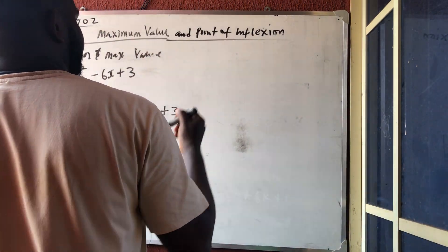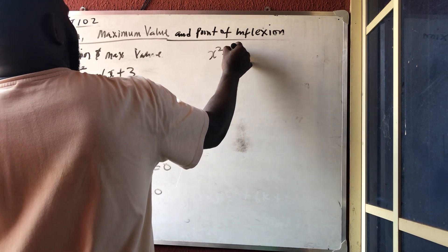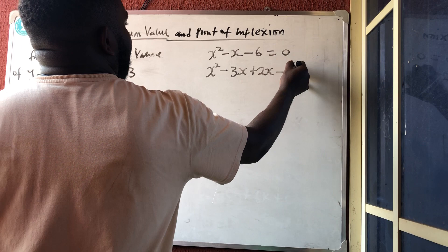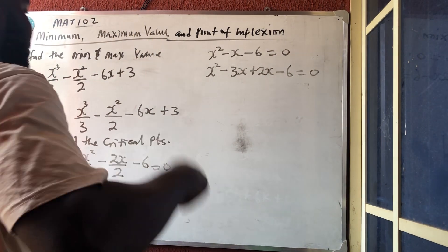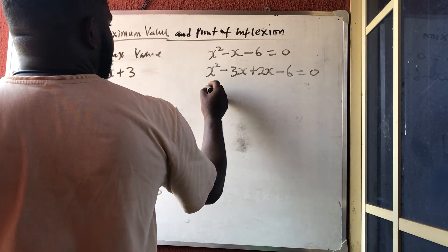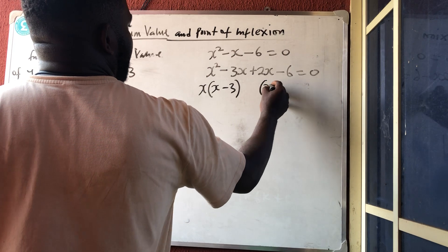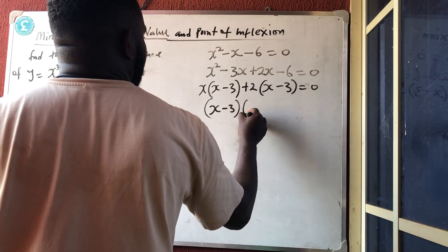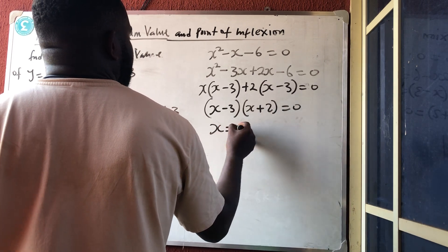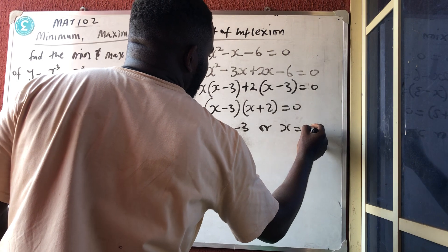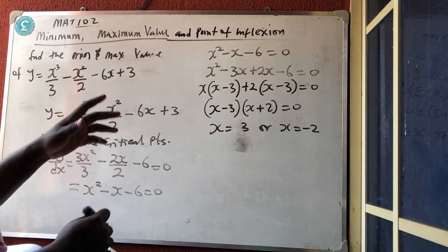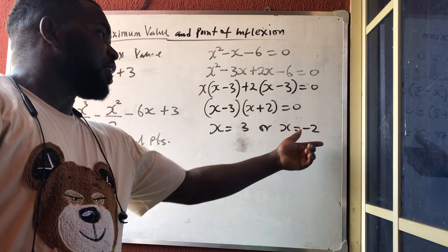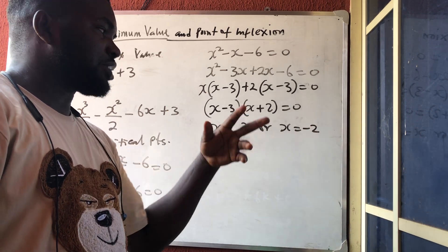So let's solve this equation by factorizing. I'm having x² minus x minus 6 equal to 0, which factors as x² minus 3x plus 2x minus 6 equal to 0. So I'm having x(x minus 3) plus 2(x minus 3) equal to 0, which means (x minus 3)(x plus 2) equal to 0. So x is equal to 3 or x is equal to minus 2. These two values are the critical points.